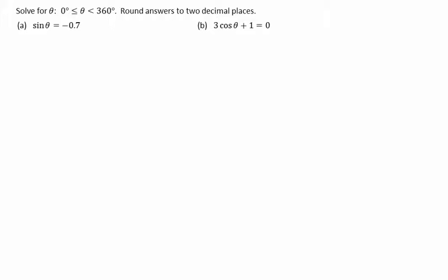Solve for theta. Round answers to two decimal places. First, solve for the reference angle for each question. Ignore the sign, simply using sine of the reference angle equals 0.7 for the first question.